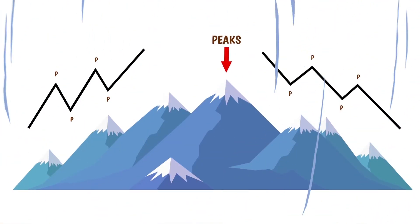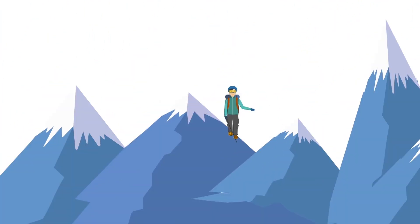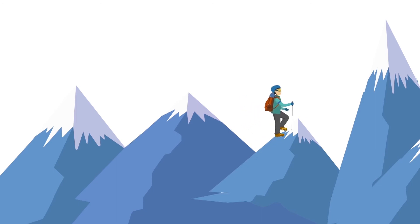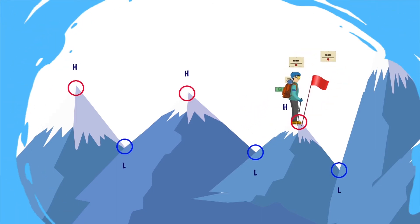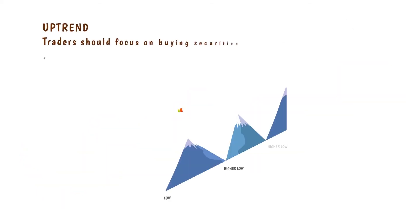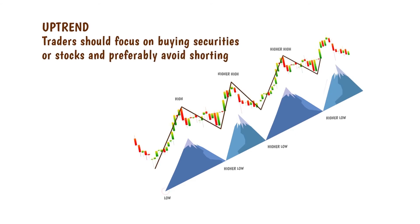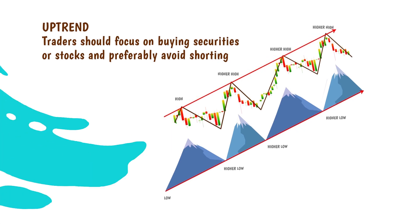Just like mountains have high and low points, similarly, even a stock price moves by making high and low points. In an uptrend, the trader should focus on buying securities or stocks and preferably avoid shorting.